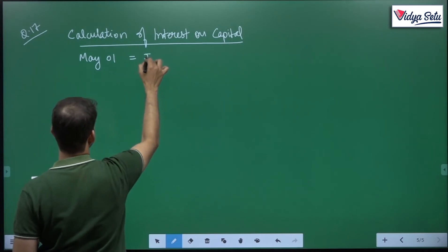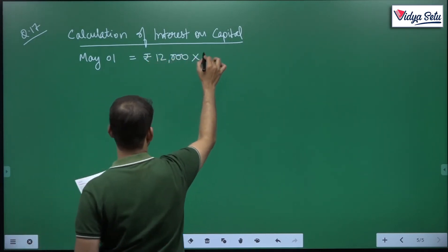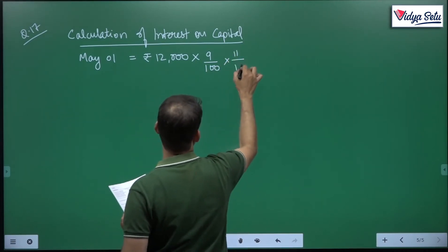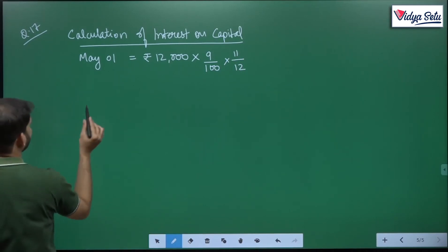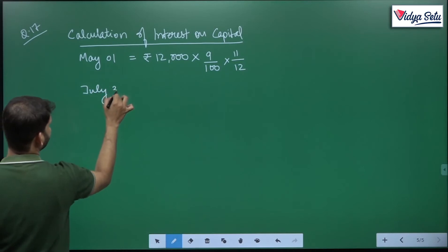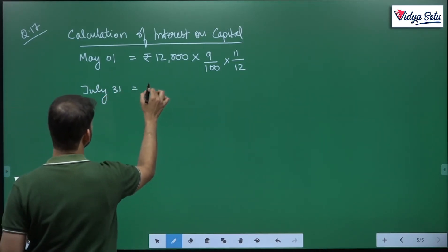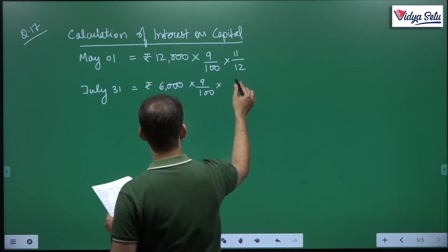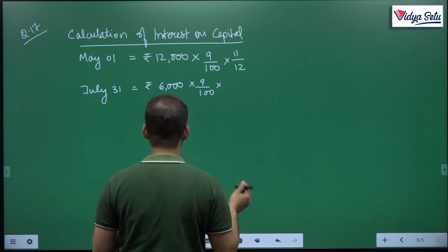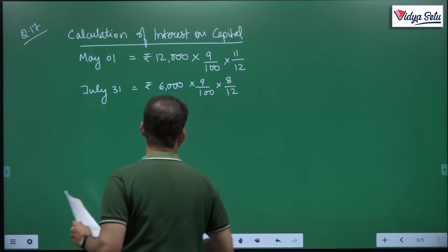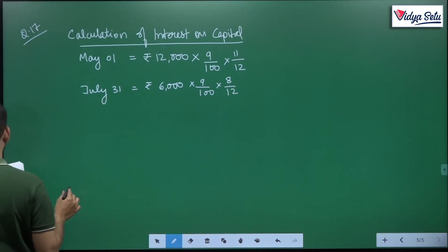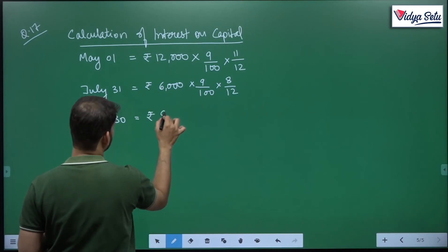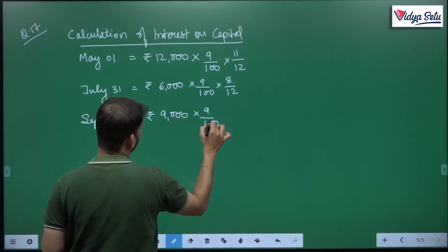May 1 he withdrew rupees 12,000, rate of interest 9 percent per annum, for 11 months: 12,000 × 9% × 11/12. Next, 31st July he withdrew rupees 6,000 at 9 percent — he withdrew on 31st July so 8 months.